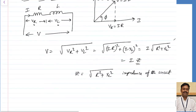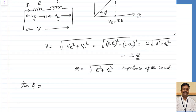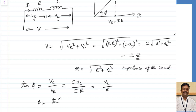From the same diagram, let us calculate tan phi. Tan phi equals opposite over adjacent, so Vl divided by Vr. Since Vl = I·XL and Vr = I·R, the I is common in both and cancels, giving tan phi = XL/R. Therefore, phi = tan⁻¹(XL/R).